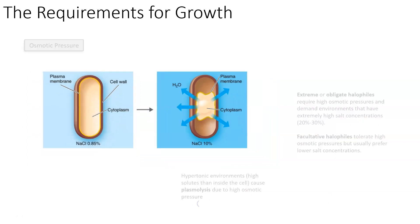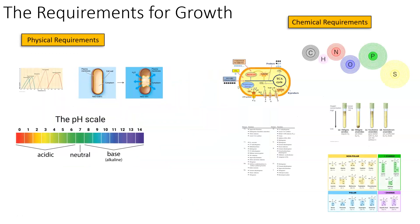To wrap it up, the three physical requirements we talked about are temperature, osmotic pressure, and pH — all very important requirements for the growth of microorganisms. In the next video, we're going to follow this up with the chemical requirements. Stay tuned — see you later.